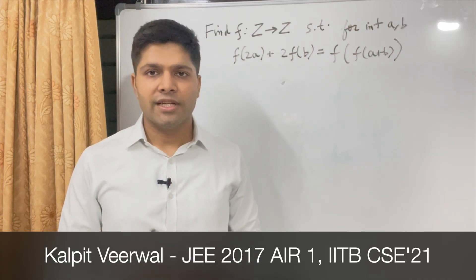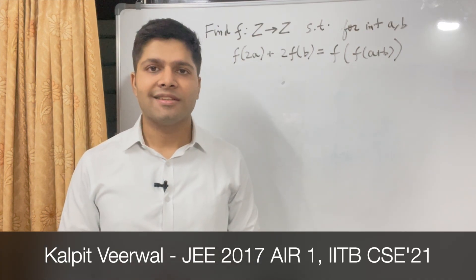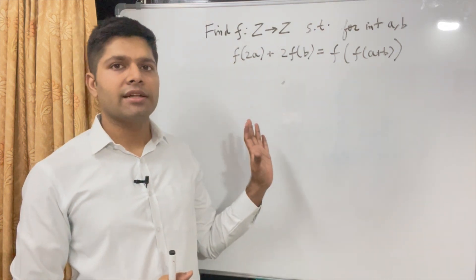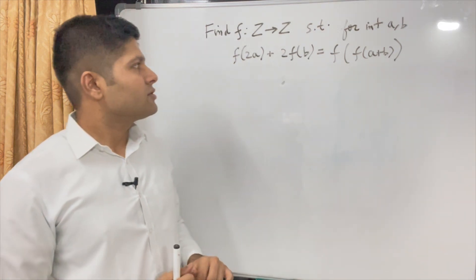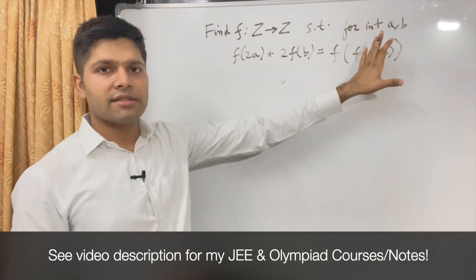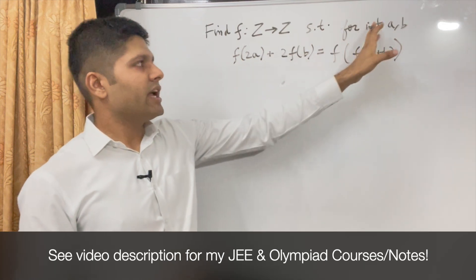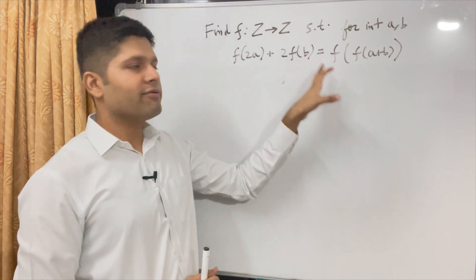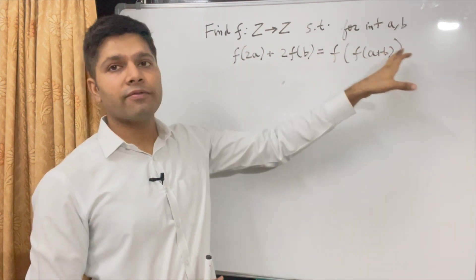Today we will be solving a question from the International Mathematical Olympiad. This is a question from the 2019 paper and it might seem a bit difficult but it's rather easy. So we have to find all such functions f such that for any integers a and b, f(2a) + 2f(b) = f(f(a+b)).